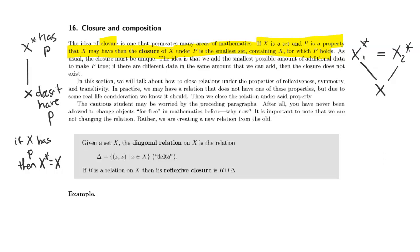So in this section, we're going to talk about how to close relations under the properties of reflexiveness, symmetry, and transitivity. In practice, we may have a relation that does not have one of these properties, but due to some real-life consideration, we know that it should. Then what we do is we close the relation under said property.